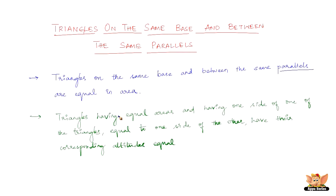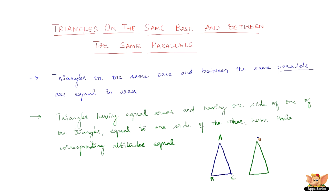Now let us go to the second property: triangles having equal areas and having one side of one triangle equal to one side of the other have their corresponding altitudes equal. Let me draw two triangles of equal areas — this is one triangle, and we have another triangle of the same area. Let this be A, B, C and let this be E, F, G. Now, you can see that all three sides of triangle ABC are not equal to the three sides of triangle EFG.